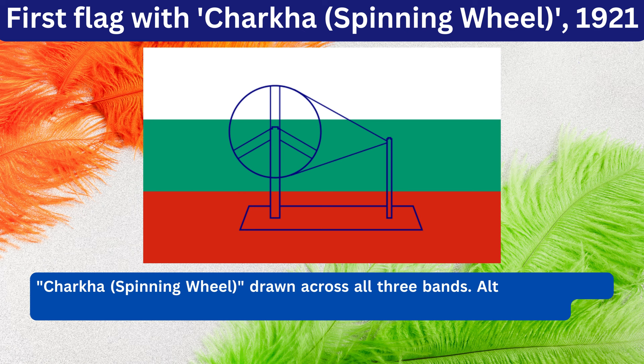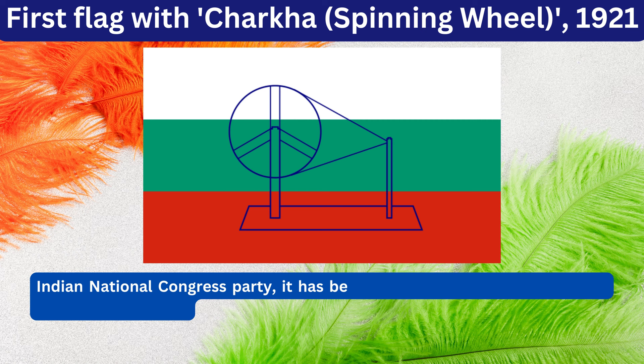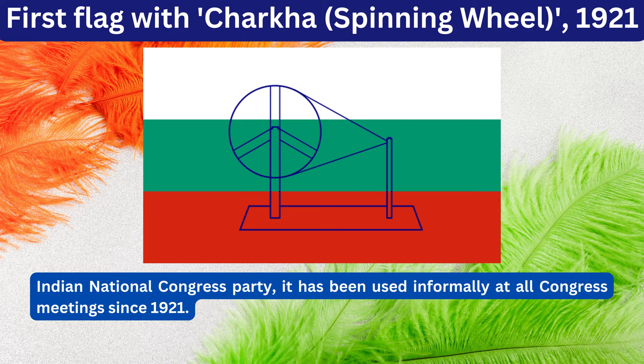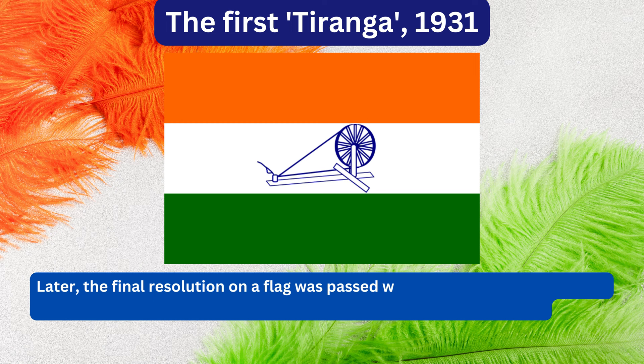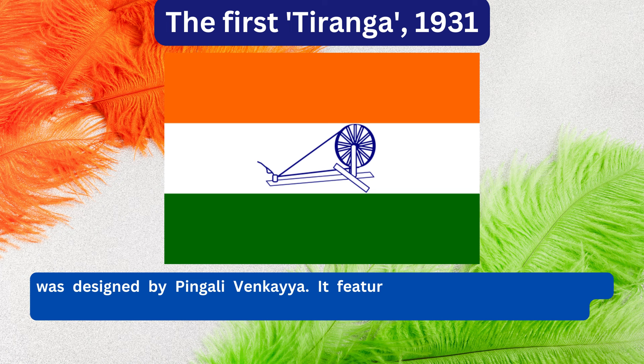Although the flag designed by Pinkali Venkaya was not adopted as the official flag of the Indian National Congress Party, it had been used informally at all Congress meetings since 1921. Later, the final resolution on the flag was passed when the Congress committee met at Karachi in 1931. The tricolour flag then adopted was designed by Pinkali Venkaya, featuring three horizontal stripes of saffron, white and green with a spinning wheel in the centre.